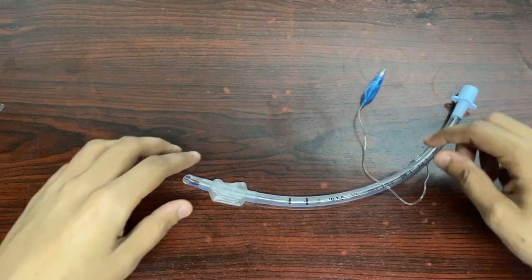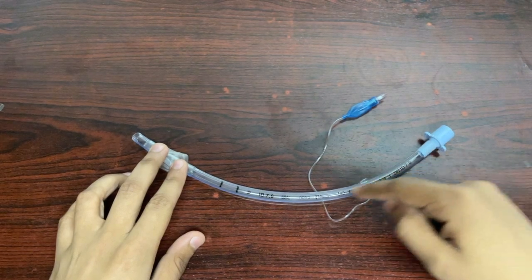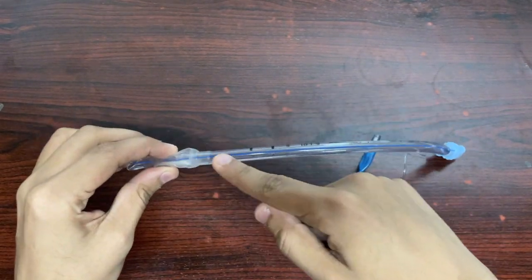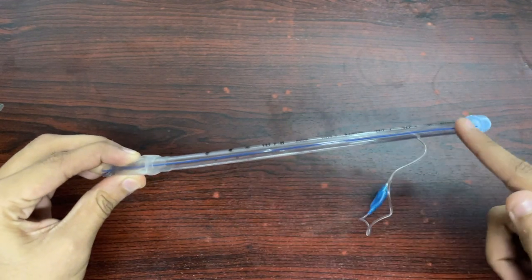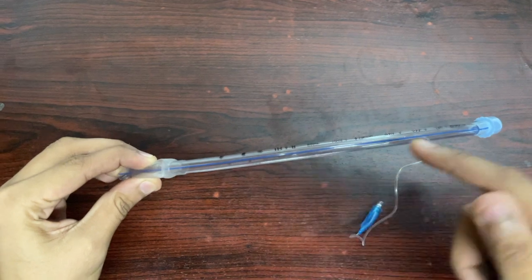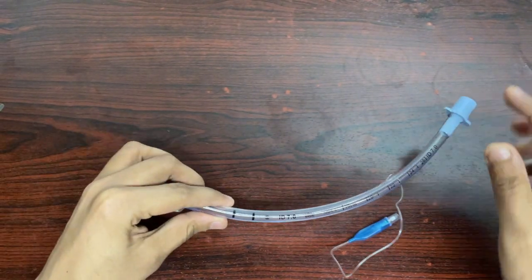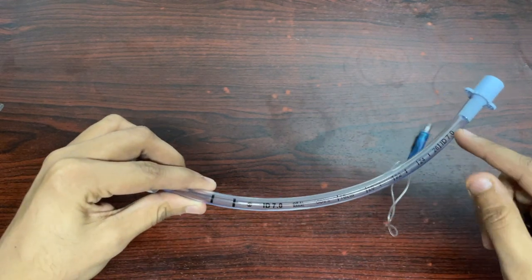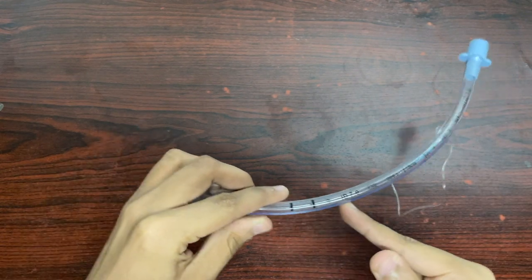Coming towards the endotracheal tube proper, which is having a blue radio opaque marking which is used to assess the position of the endotracheal tube via chest x-ray. Further, it is having various markings indicating the distance through the opening.